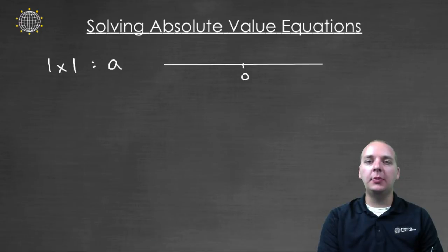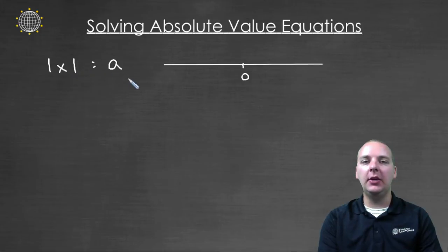We remember what absolute value means. When you take the absolute value of a number, that means its distance from zero. So here we're looking for a number whose distance from zero is a units.